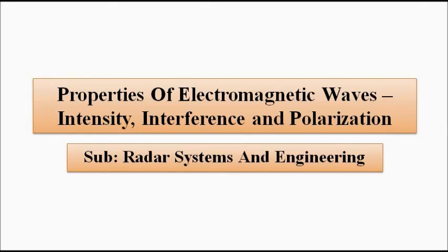Hello friends, welcome to Engineering Tutorial. We will continue our discussion with radar systems and engineering. So far we have discussed the basic introductory concepts related to radar, the generalized block diagram representation, radar configurations, the basic parameters measured using radar, and the basic concepts related to electromagnetic waves. In this video we are going to discuss some more properties of electromagnetic waves: intensity of the transmitted and received waves by the antenna, interference of electromagnetic waves, and polarization.